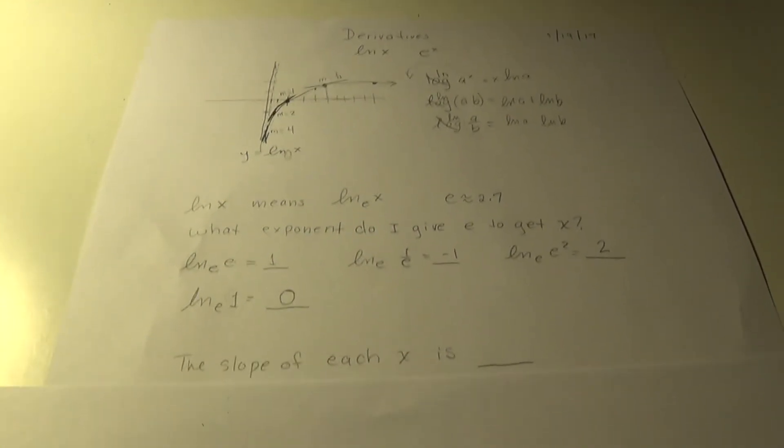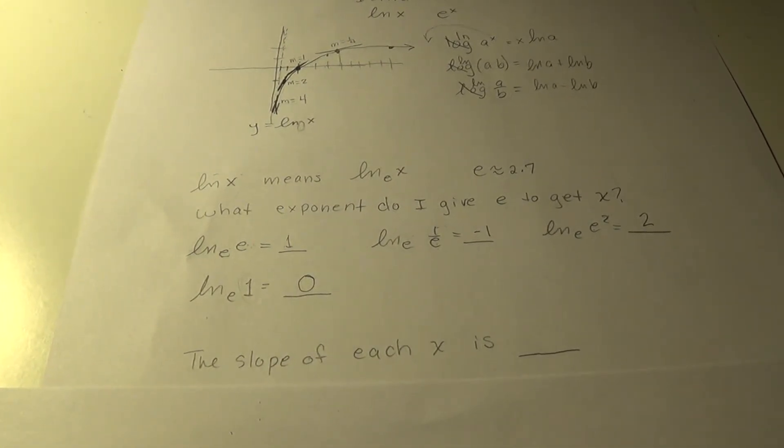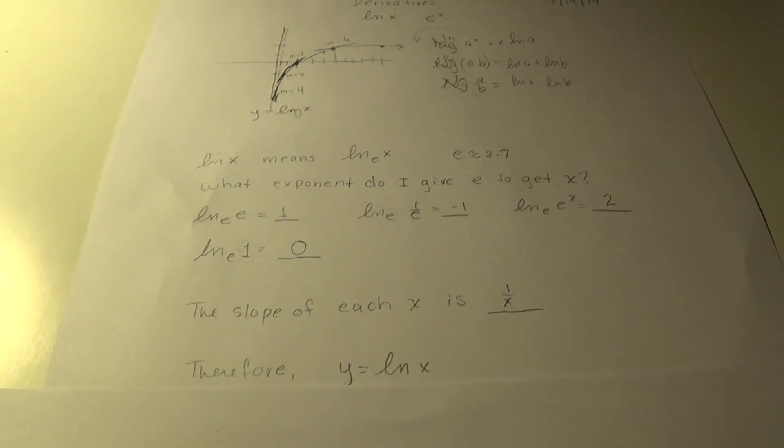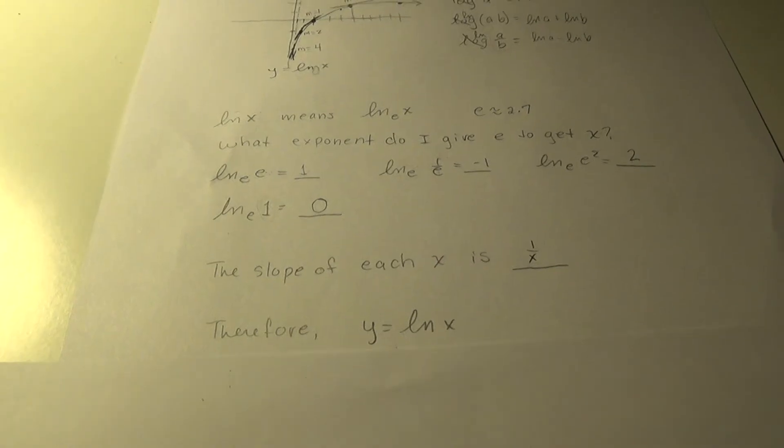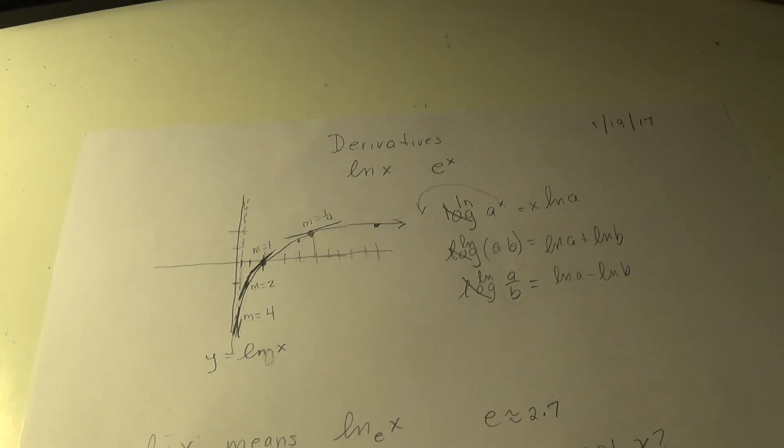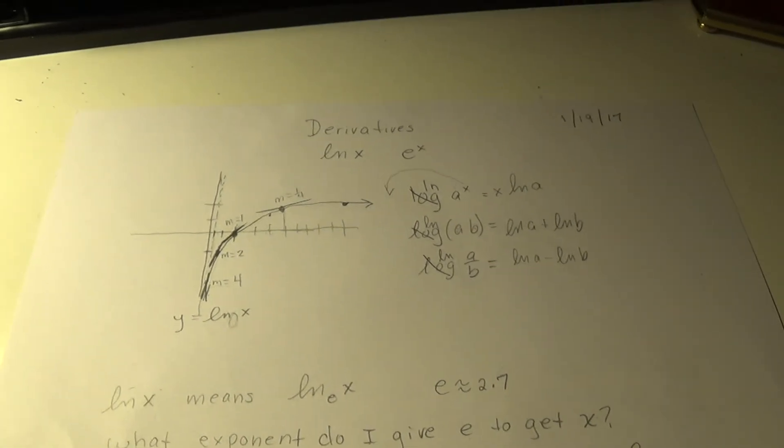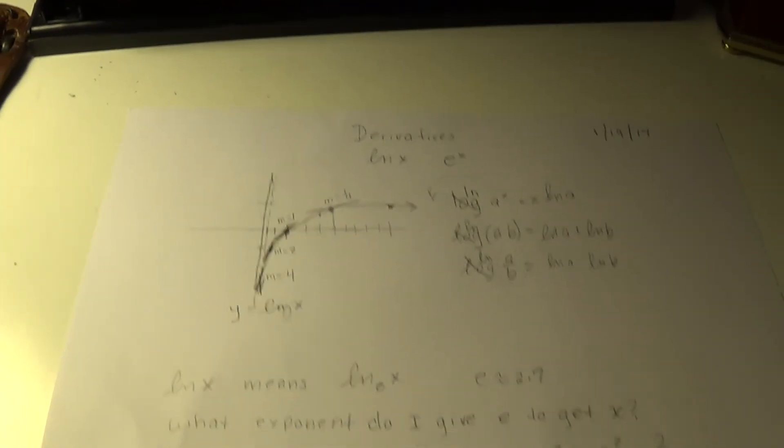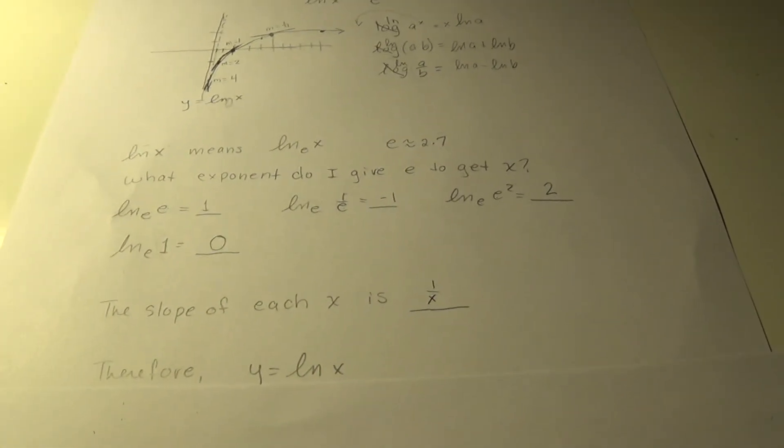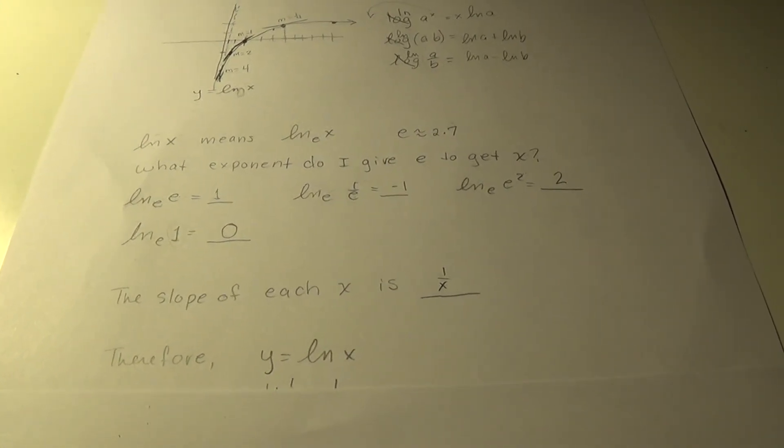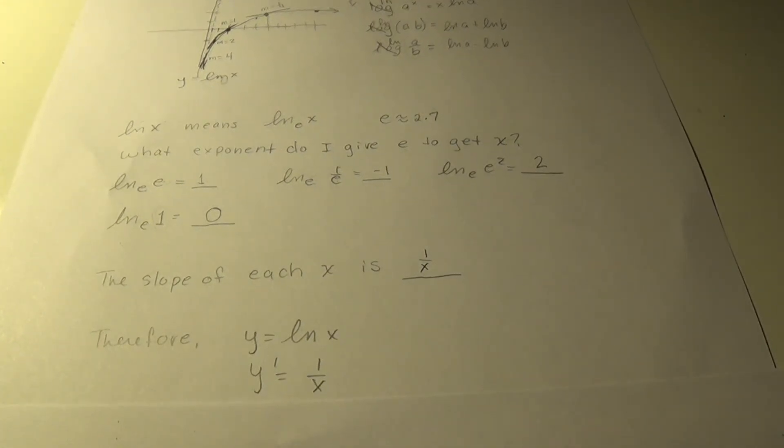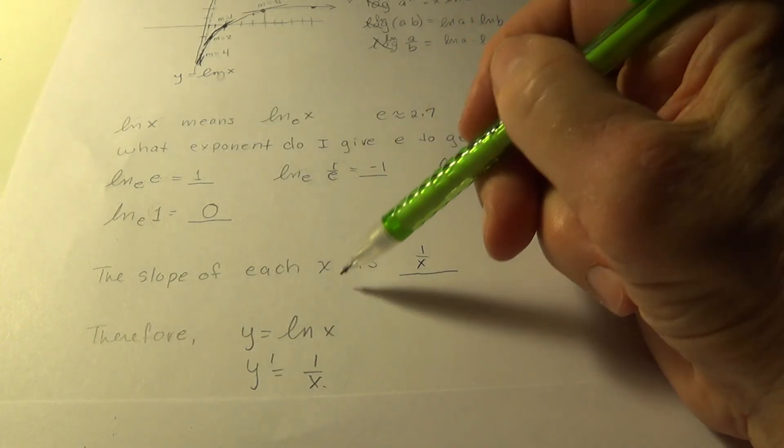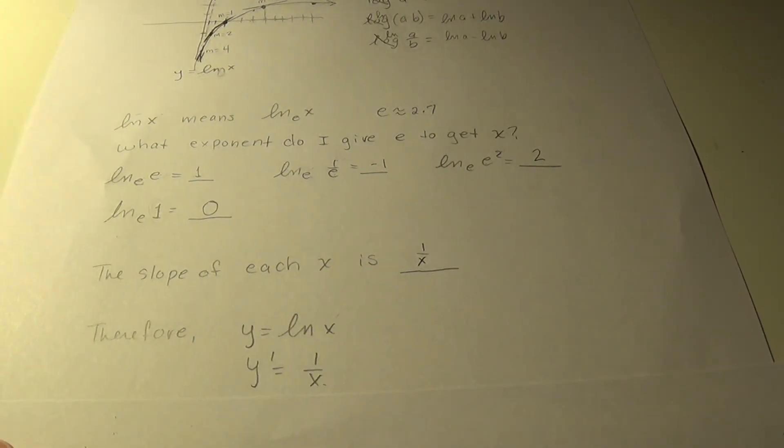So let me put that. The slope of each x is the reciprocal, 1 over x. And therefore, and later when we learn about integrals, we'll be able to come back and do a more rigorous understanding of why the derivative is what it is. But for now, I'll just sort of lead you to it. If y equals ln of x, then y prime is 1 over x.